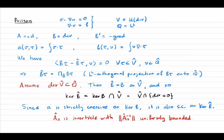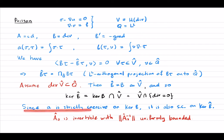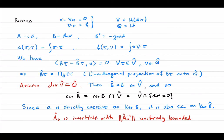If we assume that the divergence of V-hat is contained in Q-hat, then B-tau is already in Q-hat, so the projector becomes the identity and B-hat equals B. This means the discrete divergence is the exact divergence, so the kernel of the discrete divergence is exactly the intersection of the discrete space with the divergence-free space. Since the bilinear form is strictly coercive on the continuous kernel of divergence, it is also strictly coercive on the discrete kernel, so A-hat-zero is invertible with uniformly bounded inverse.